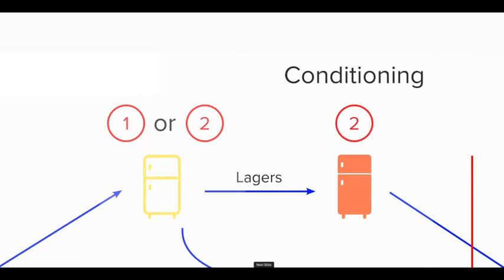The other potential bottleneck is the conditioning fridge. The lagers in the conditioning fridge can be there for anywhere between two and six weeks depending on our patience and the quality we're looking for — potentially even up to 12 weeks. So that could be a fairly considerable bottleneck before getting things ready to serve.